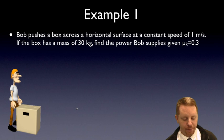In our first problem here, Bob pushes a box across a horizontal surface at a constant speed of one meter per second. If the box has a mass of 30 kilograms, find the power Bob supplies, given that the coefficient of kinetic friction, of sliding friction, is 0.3.